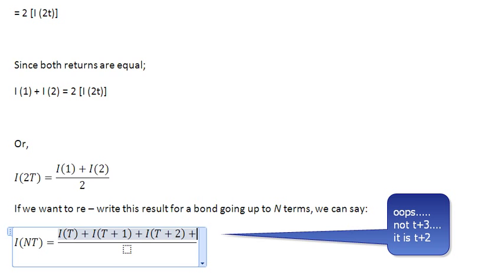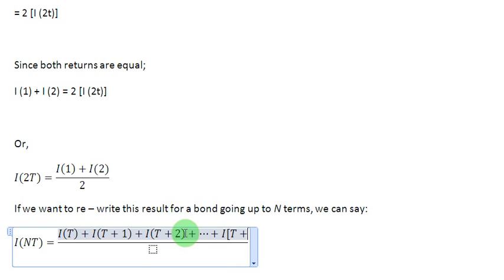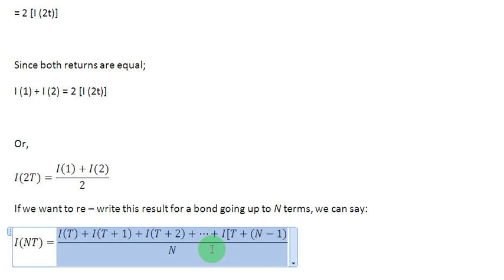If this series goes on till N number of terms, what we are going to have in the end is we write I(T + N−1) as the last term. And in the denominator we simply write an N. So that gives us the formula for a bond that matures in N time periods: its interest rate is going to be equal to the average of all the short-term interest rates.